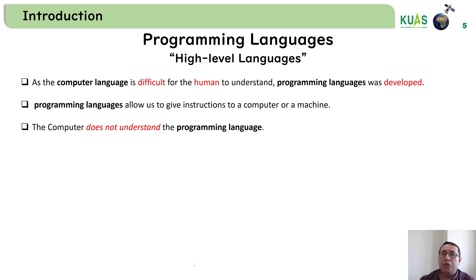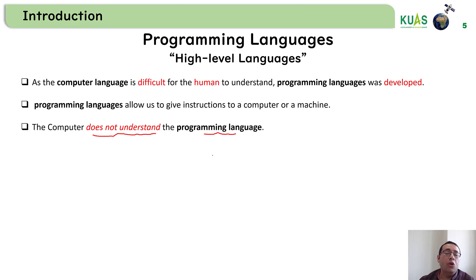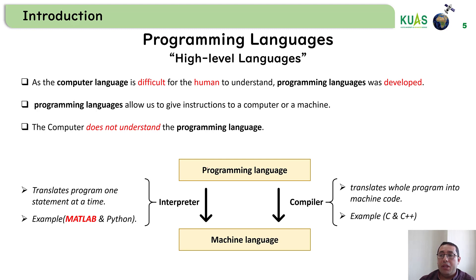Because binary digits are very difficult for humans to write and remember, they invented something called the programming language. Programming language allows us as humans to give some instructions — a kind of command — to the computer or machine, so we can ask the computer to do some tasks. But the problem is the computer doesn't understand the programming language; it only understands machine language. So we need to link between the programming language, which humans understand, and machine language, which the computer understands.